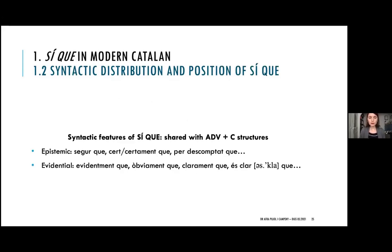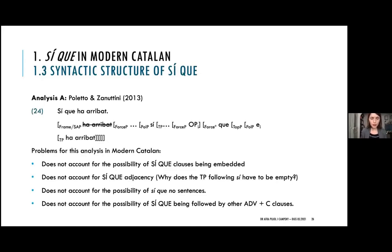These syntactic features that I have just described for CK are actually shared with adverb-plus-complementizer structures that, as I said before, can be in Catalan epistemic or evidential. This is something that will be relevant when we look at the diachronic evolution of CK. Several analyses have been proposed for CK across the Romance languages — I will sketch them now and draw the main points as to why they may or may not be relevant for the modern Catalan data.